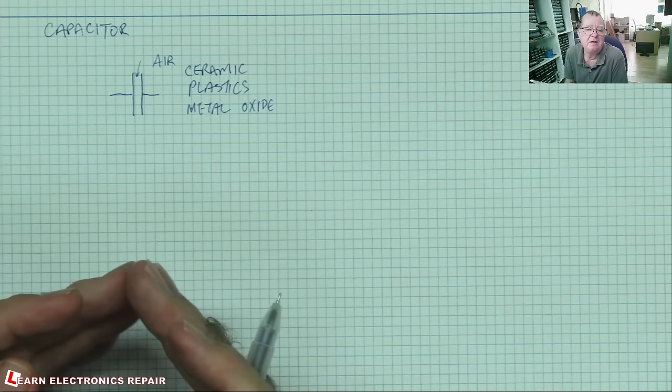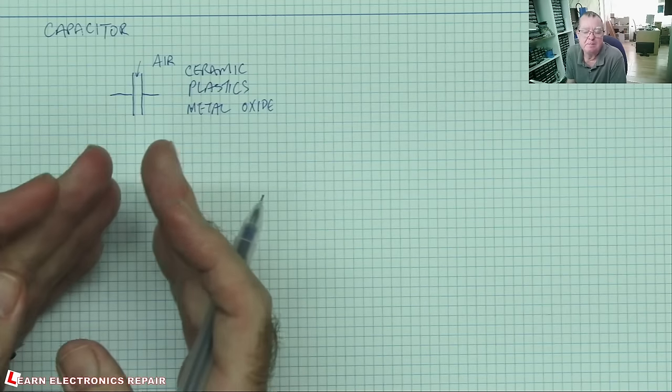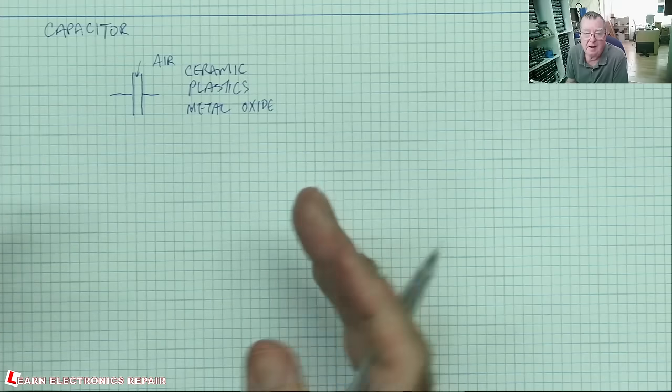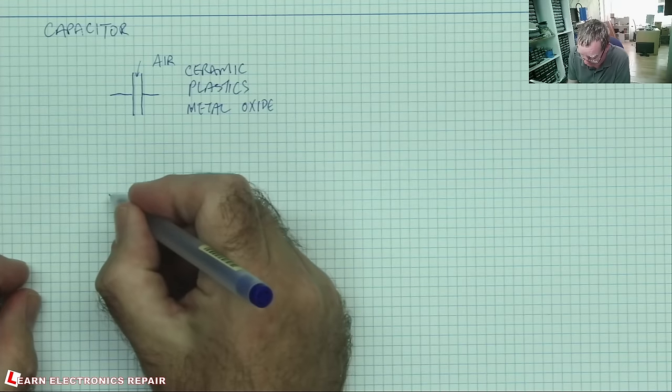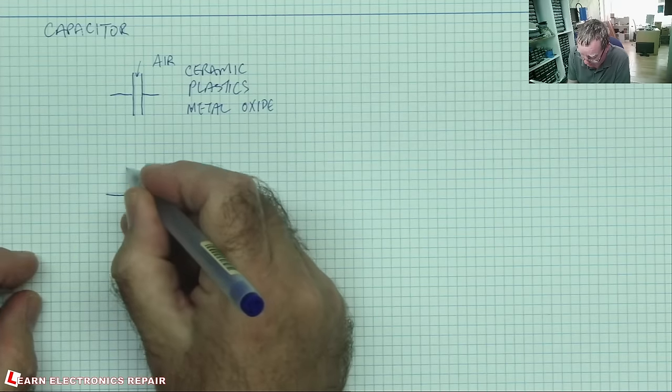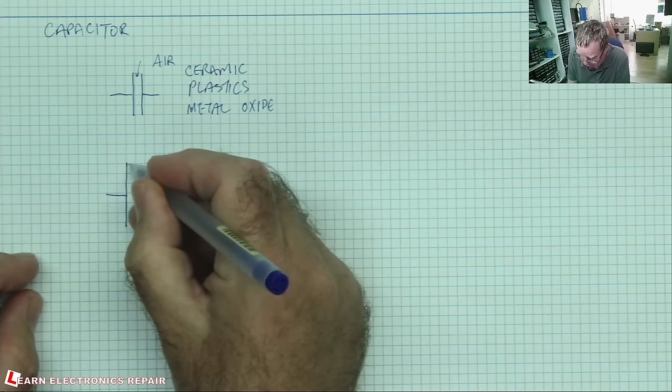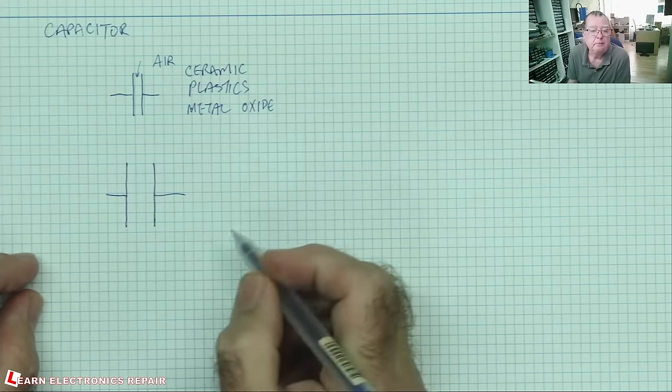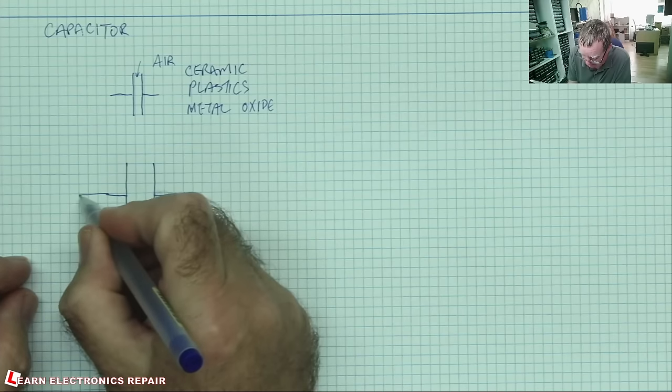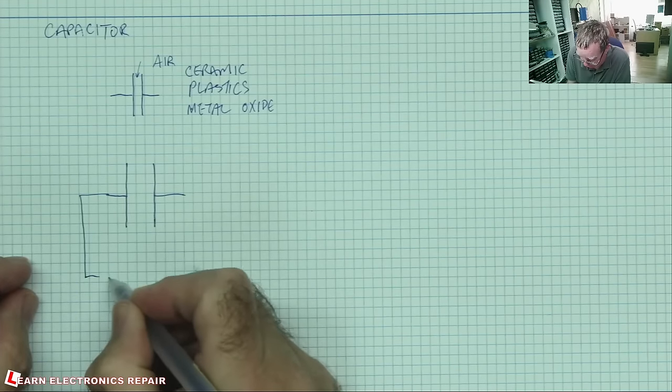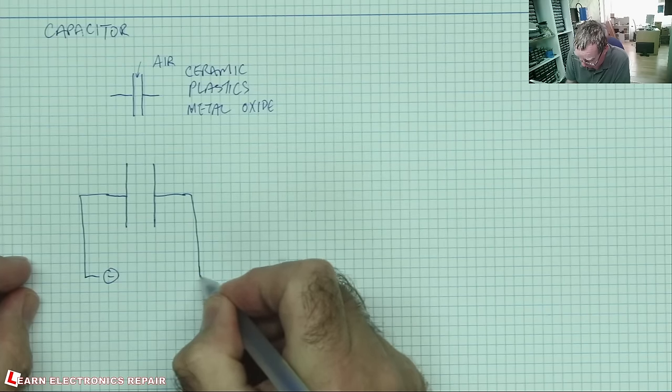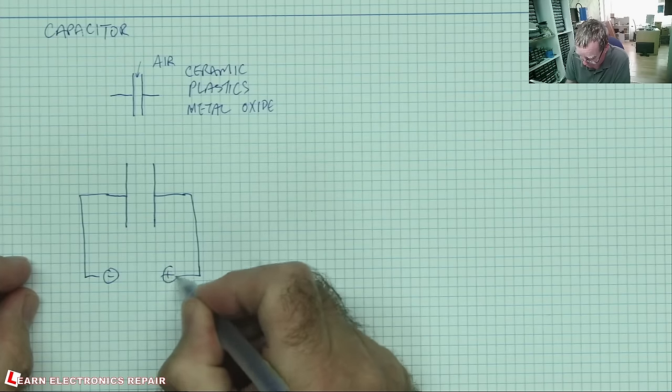The way the capacitor stores electricity is in the electric field between the two plates. The basic principle of this is that if we have two pieces of metal and we connect this one to a negative supply, this one to a positive supply, because you have to complete a circuit.